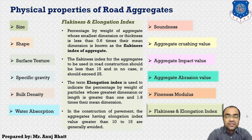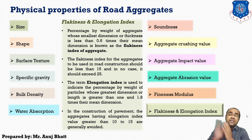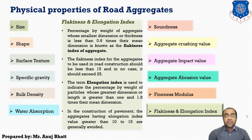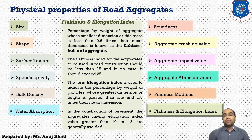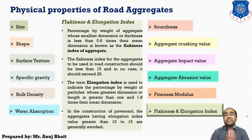The elongation index indicates the percentage by weight of particles whose greatest dimension or length is greater than 1.8 times their mean dimension. This test is not applicable to aggregate sizes smaller than 6.3 mm. Elongated particles are likely to break under smaller loads in pavement construction. Aggregates having an elongation index value greater than 10 to 15 are generally avoided for road construction.